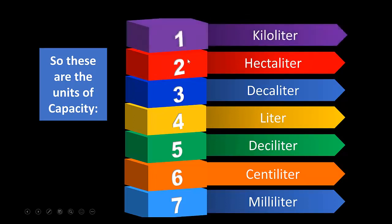If you want to convert kiloliters to hectoliters, you multiply by 10. If you want to convert kiloliters to decaliters, you multiply by 100. If you want to convert milliliters to centiliters, you divide by 10. And if you want to convert milliliters to deciliters, you divide by 100.